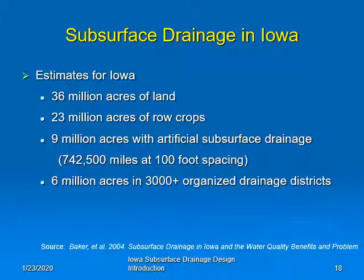Subsurface drainage is very important in Iowa. Some decade-old estimates include 36 million acres of land in Iowa, of which 23 million acres is in row crops — and that's probably higher today. Nine million acres have artificial subsurface drainage, and if that averaged 100-foot spacing, that would result in over 700,000 miles of drain tile and pipe in the ground in Iowa. There are 6 million acres in over 3,000 organized drainage districts. Recently, high crop prices and profits have led farmers to install drain pipes so extensively that manufacturers could not keep up with demand.